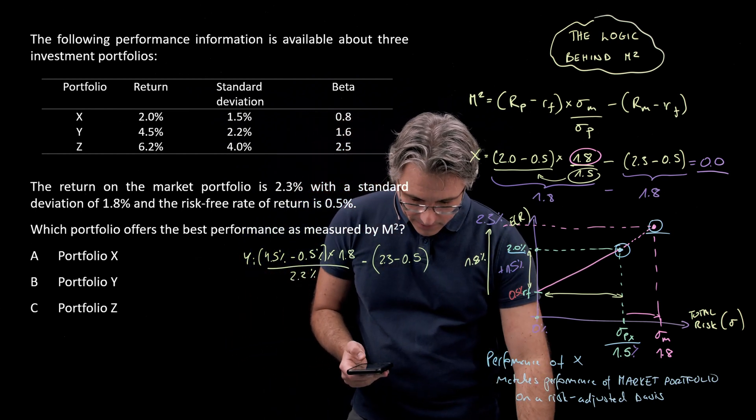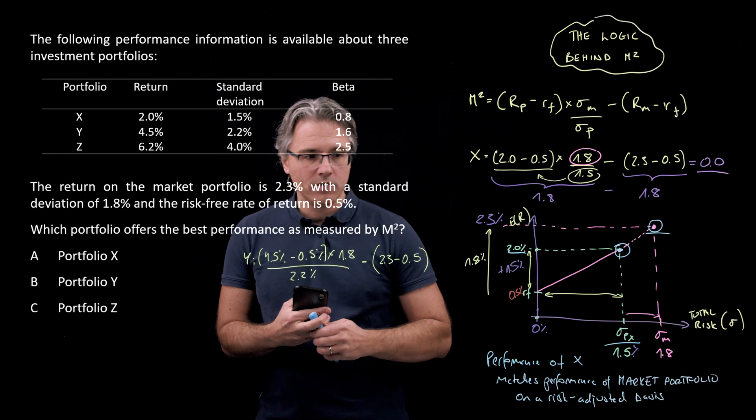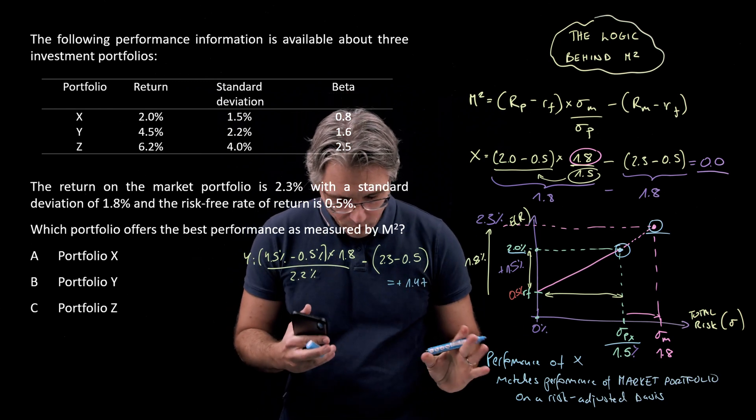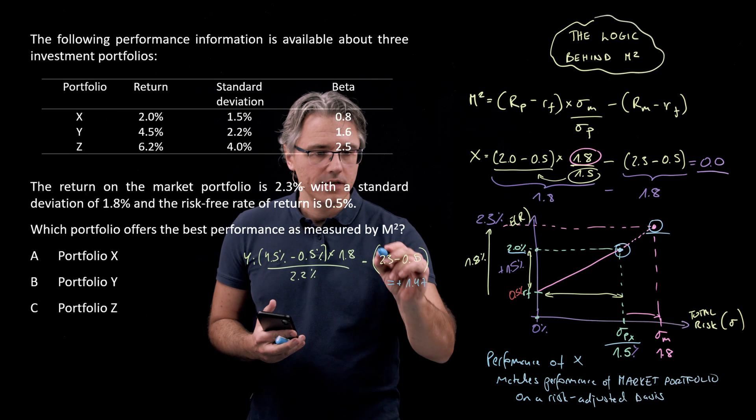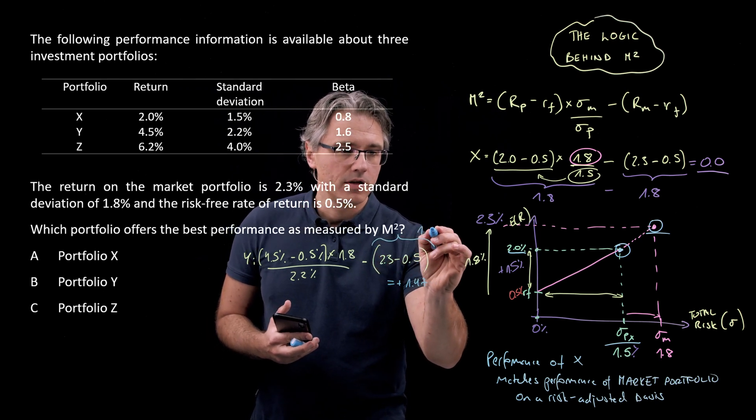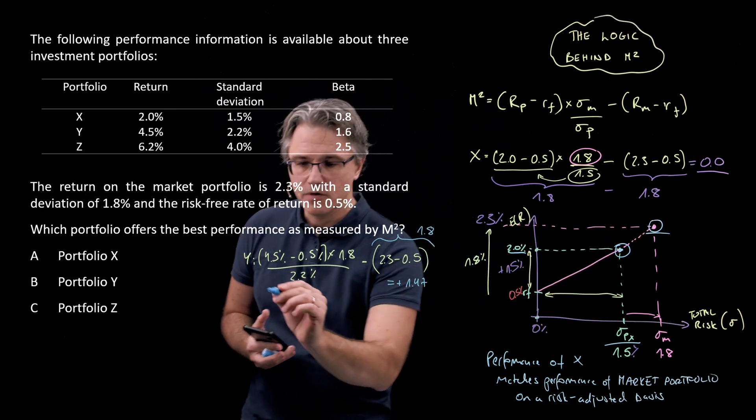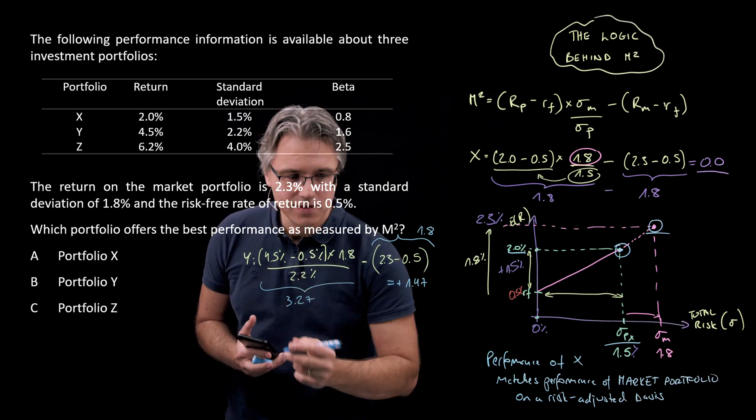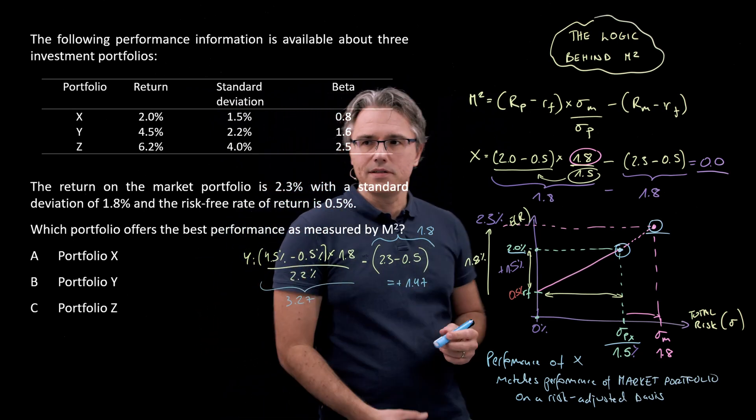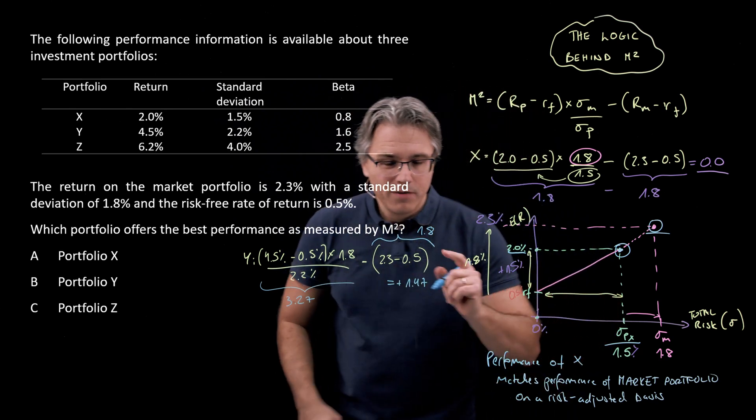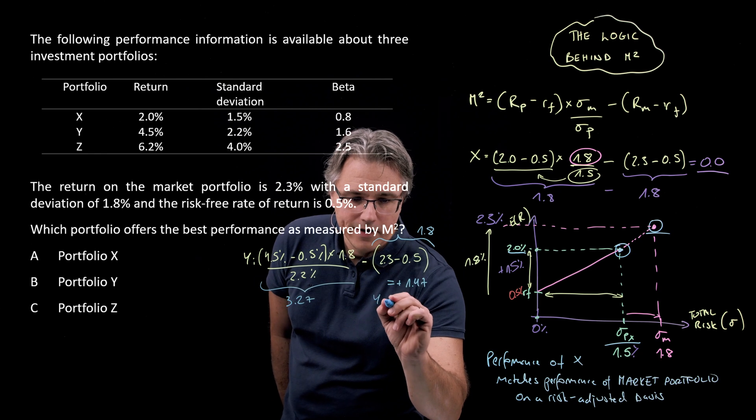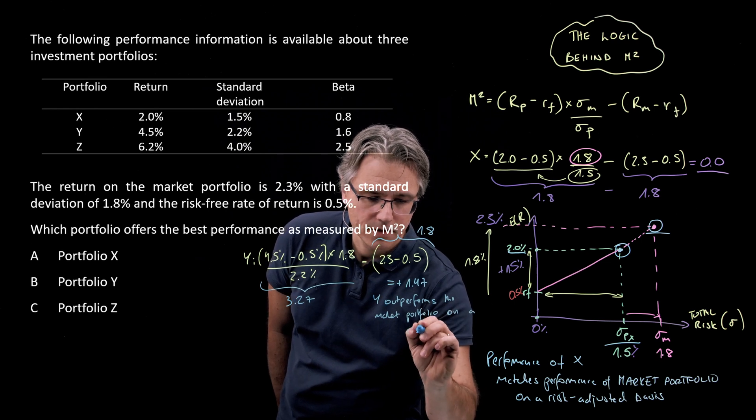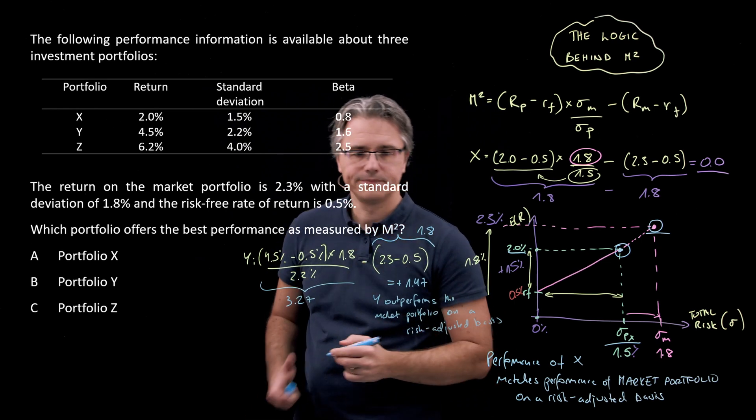If I wanted to write down the component parts, obviously this, just like before, this gives 1.8 because it's the same term as before, whereas this one is a little bit higher. It was 3.27. Now this is positive M-squared. So I'm going to write down that Y outperforms the market portfolio on a risk-adjusted basis.